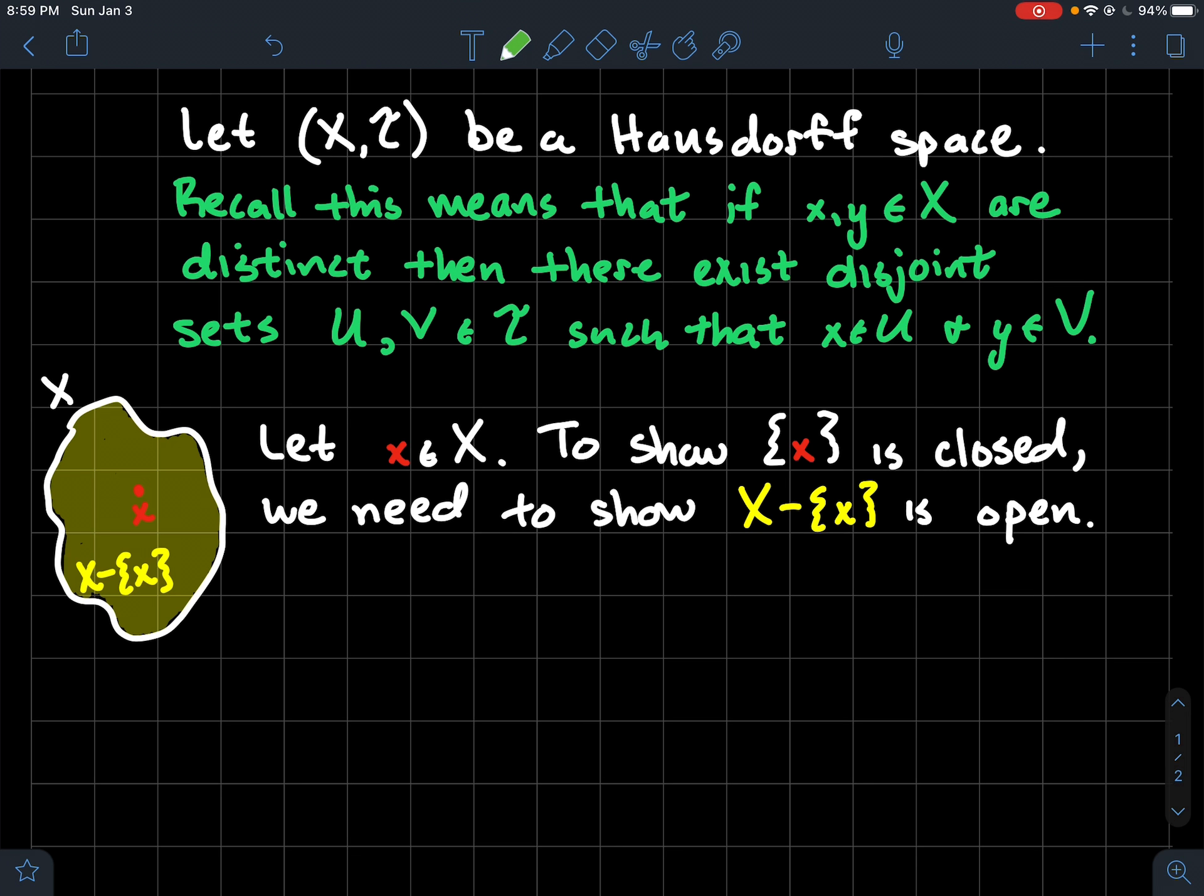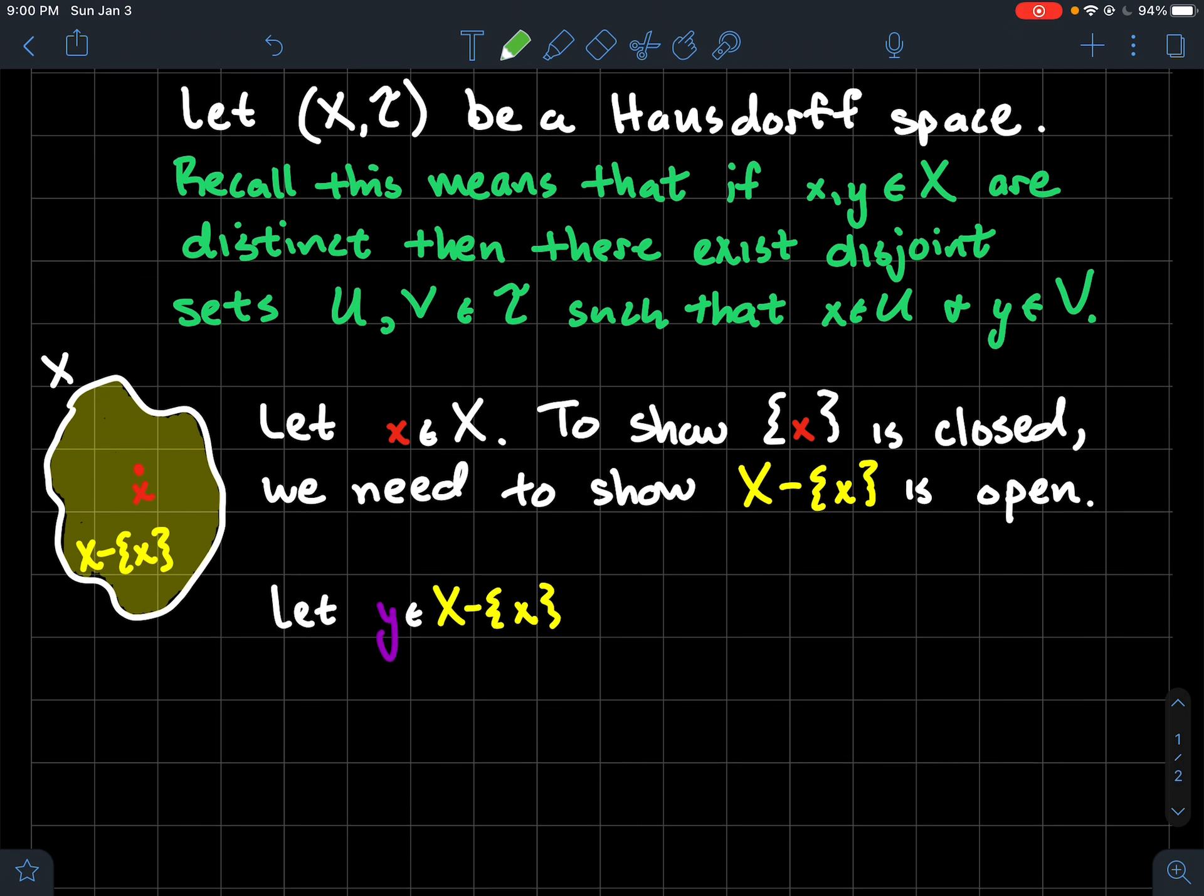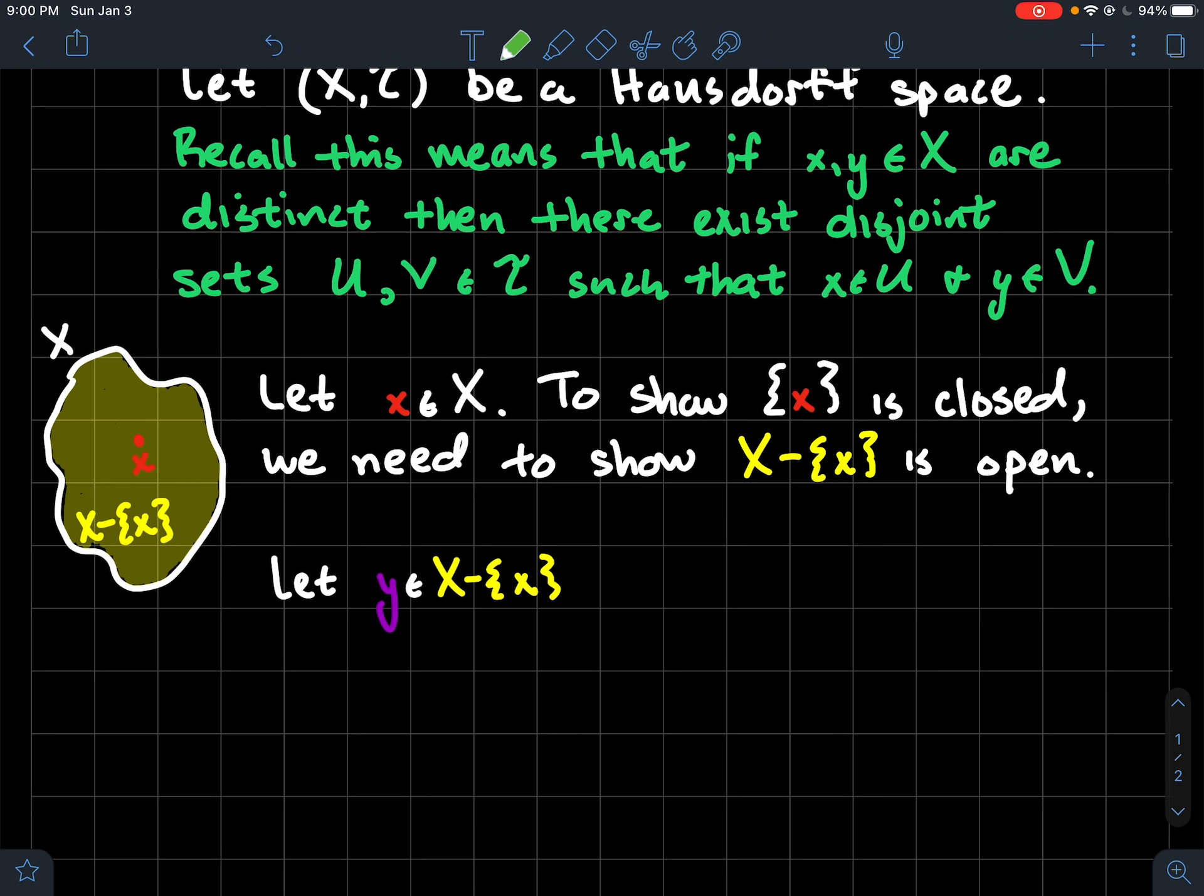To give you a little picture here I've drawn the space X, it's in white, it's the whole blob, little x is the red point, and the complement of little x is in yellow. So what do we need to do? We need to show that that yellow set is open.